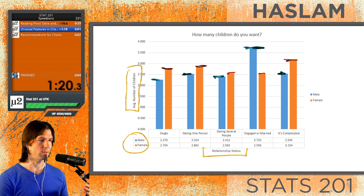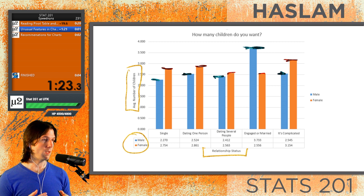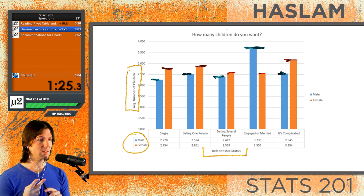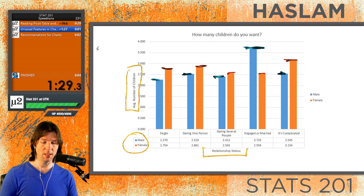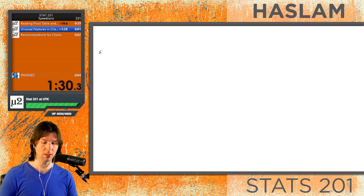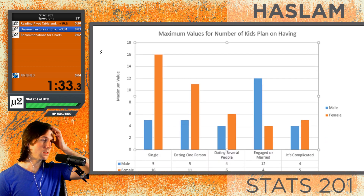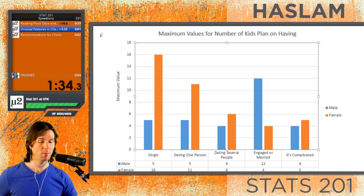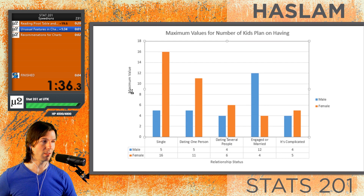We may also want to look for outliers, because there are more ways to analyze this data. We could analyze the min, the max, the median, the average — lots of things we could analyze. So let's go ahead and take a look at the max for this data. This shows the maximum number of children people plan on having based on each group.